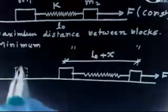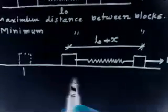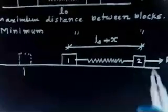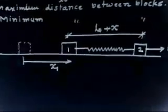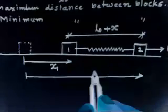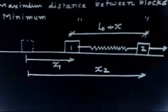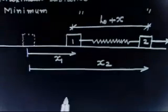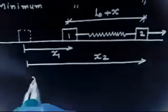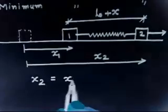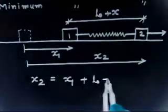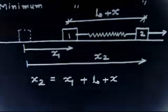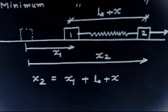From the initial position, I count all distances. Block 1 is at coordinate X1 and block 2 is at coordinate X2. So I can write one equation: X2 equals X1 plus L0 plus X. This is an important relationship that we will use.